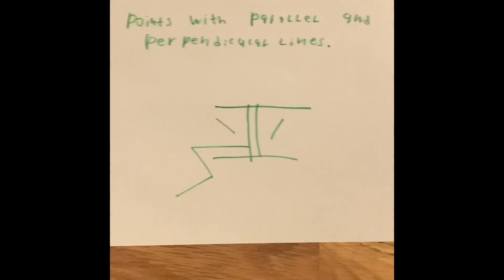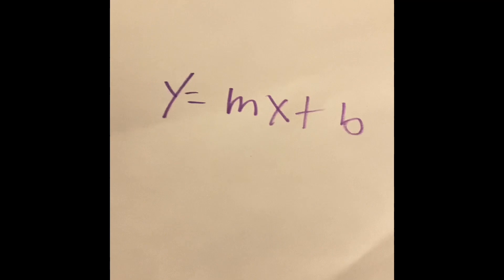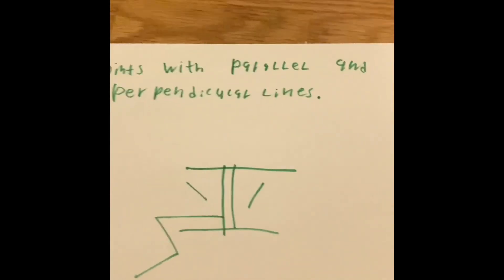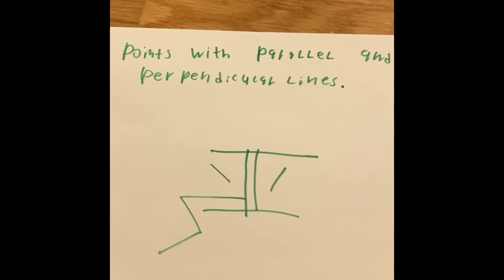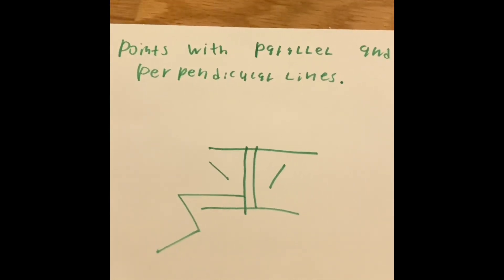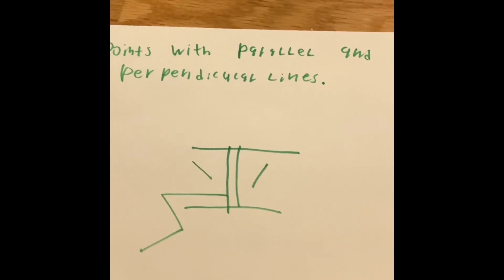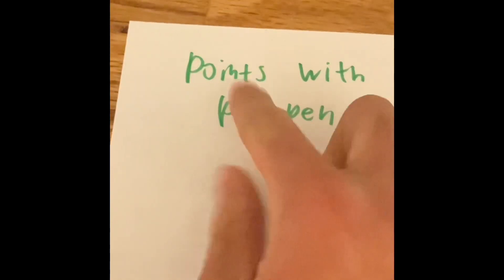In the past video, we have been taking a look at y equals mx plus b. We have also been taking a look at parallel and perpendicular lines, so we're going to be solving them and seeing what the slope is when we have a point go through it.